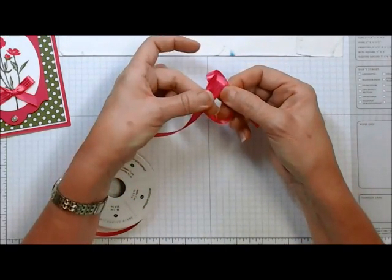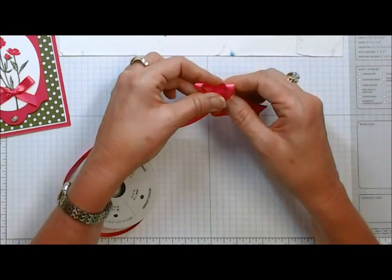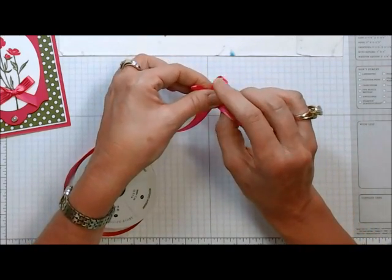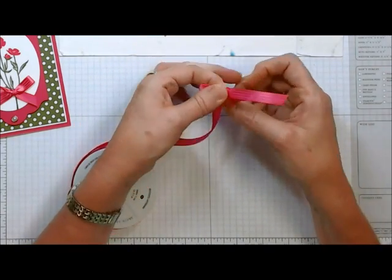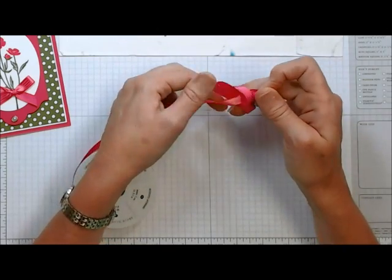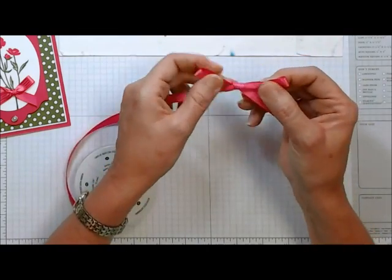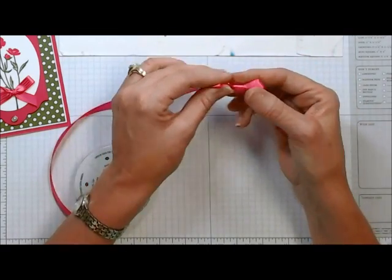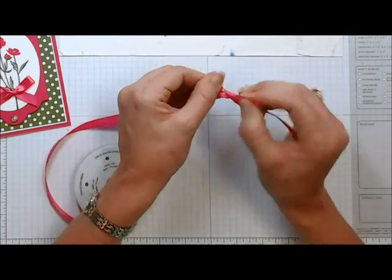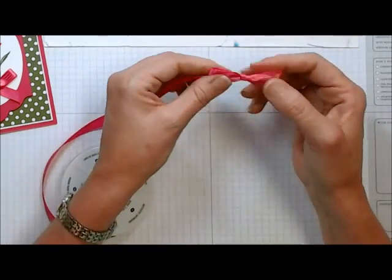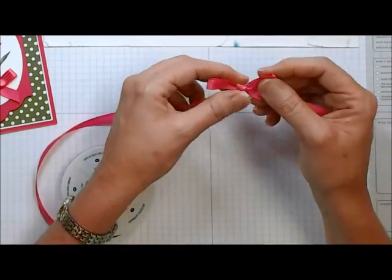You're going to take the left, my left hand loop, bring it over the loop and through the center and pull. And then just tighten up your strings and there you have your bunny bow.